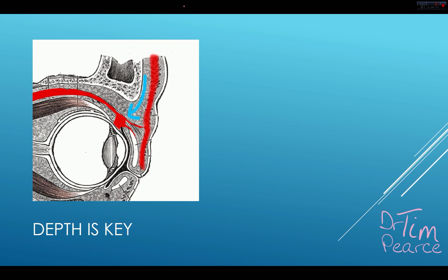If you put an injection straight through the orbicularis oculi muscle, quite close to the bone, there's a potential space where botulinum toxin can trickle down and get into that orbital space, affecting the muscle that lifts the eyelid. In actual fact, the orbicularis oculi, which we all worry about, probably forms a barrier to eyelid ptosis. So if you're superficial and above the orbicularis oculi, you have a protective barrier. Placing product above or within the muscle — but not underneath it — is the key fact that will change your injection technique.